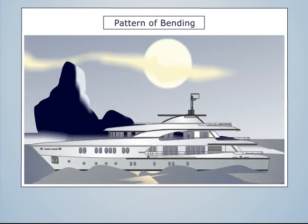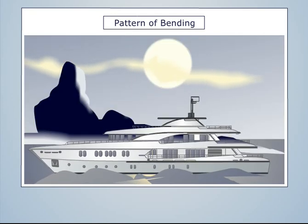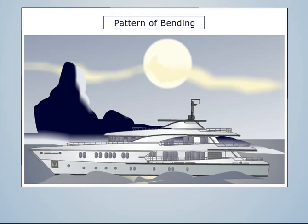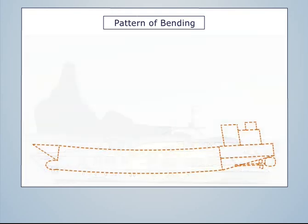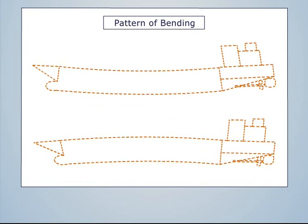Let us look at the pattern of bending which are hogging and sagging. Do you know what is hogging and sagging? Look at the ship. When it is curved downwards it is called sagging, and when it is curved upward it is called hogging.